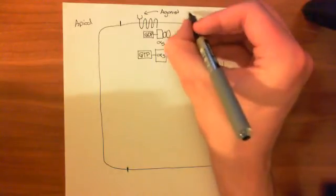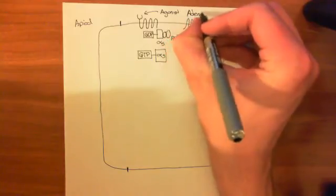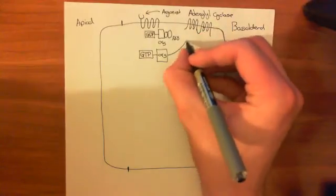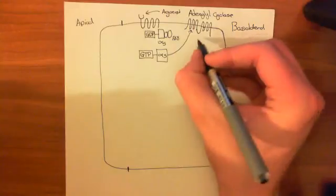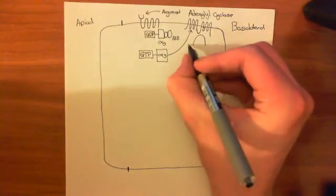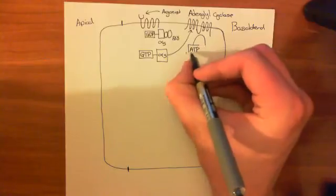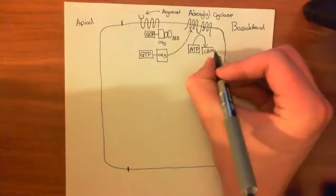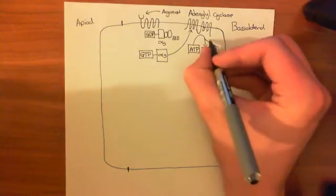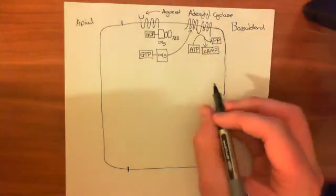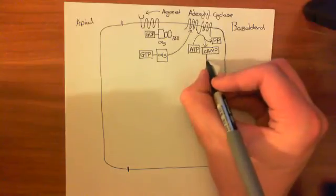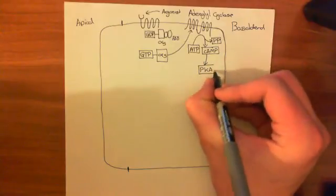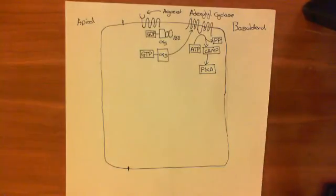So that's adenylyl cyclase. What is going to happen is that the alpha-S GTP is going to go and activate that enzyme, and this enzyme is going to convert ATP — adenosine triphosphate, the energy currency of the cell — into cyclic AMP and pyrophosphate. Cyclic AMP is then going to activate protein kinase A, and protein kinase A is responsible for activating salt secretion.